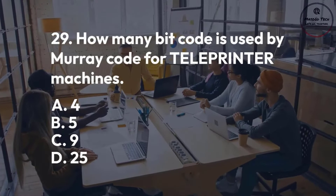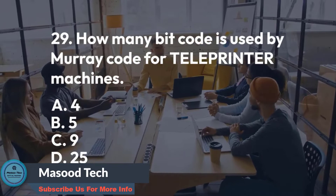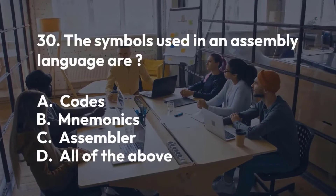Number 30. The symbols used in an assembly language are: A. Codes. B. Mnemonics. C. Assembler. D. All of the above. Correct answer is B.